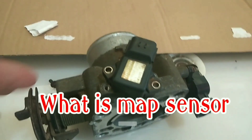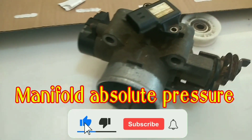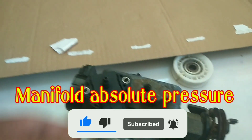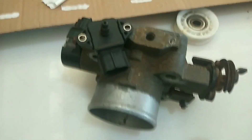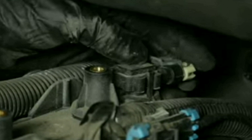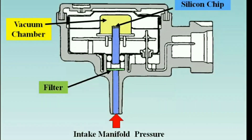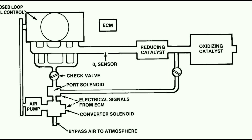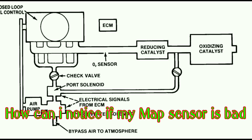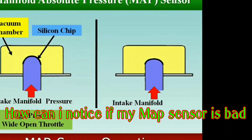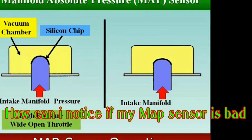What is a MAP sensor? A Manifold Absolute Pressure sensor is one of the sensors used in an internal combustion engine's electronic control system. Engines that use a MAP sensor are typically fuel injected. The manifold absolute pressure sensor provides instantaneous manifold pressure information to the engine's electronic control unit (ECU).